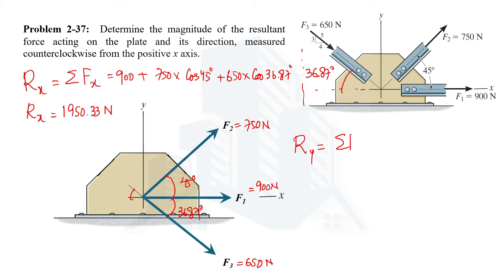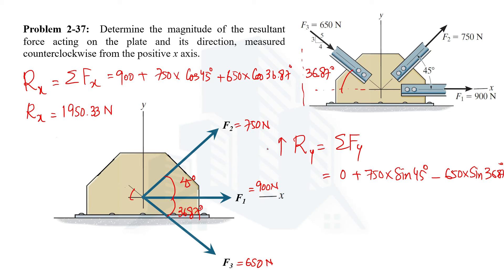The y-component of the resultant force equals the summation of y-components of all forces. The y-component of F1 is 0 (since sin 0° = 0), the y-component of F2 is 750 × sin 45°, and the y-component of F3 is −650 × sin 36.87° (negative because it acts downward). Upward forces are taken as positive for the y-axis, and rightward forces as positive for the x-axis. This gives the y-component of the resultant as 140.33 N.